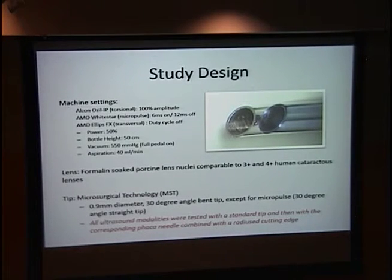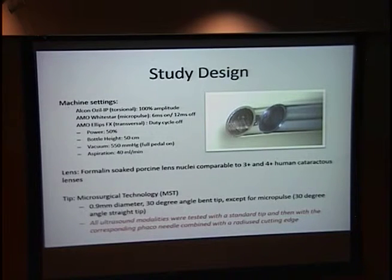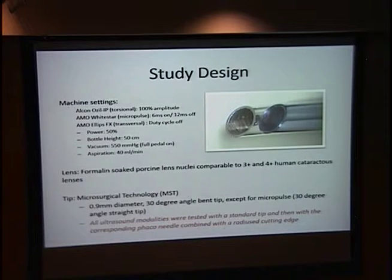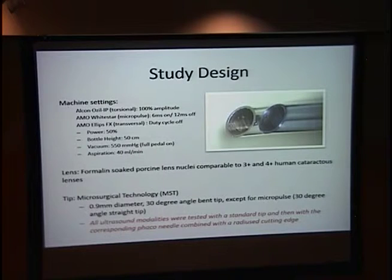Our study design has been used in a bunch of our studies looking at optimizing phacoemulsification. We used three different ultrasound modalities: the Alcon, which is a torsional ultrasound; the AMO WhiteStar, which is a micropulse; and the AMO Ellipse, which is a transversal modality. We used the same powder, bottle height, vacuum, and aspiration to keep all parameters even between them. Our lenses are porcine lens nuclei that we order and soak in a 10% formalin solution to mimic human cataracts. We looked at two different types of lenses comparable to both a 3-plus and a 4-plus human cataract lens. The tips are all from MST; we use a 0.9 millimeter diameter — found to be the most efficient in previous studies — and a 30-degree angle bent tip, except for micropulse, which uses a straight tip. We then used them with their direct counterpart with a radius cutting edge.